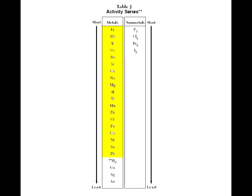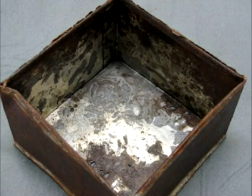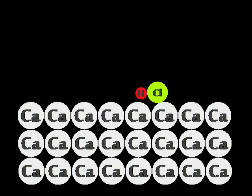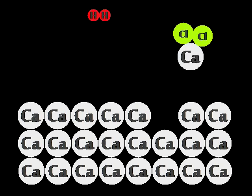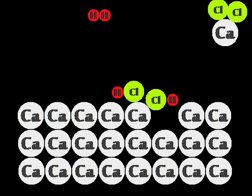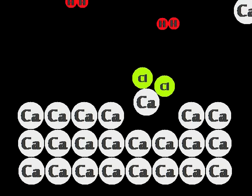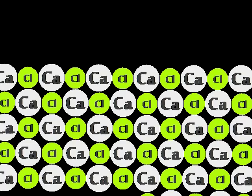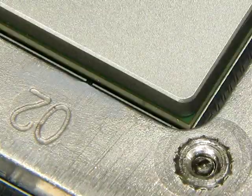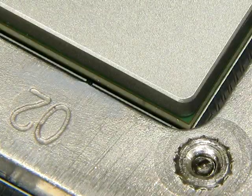Reactive metals like Ca and Fe oxidize. When reacted with an acid, they can really shrink in size. Gaseous hydrogen is formed, as well as salt, in fact.